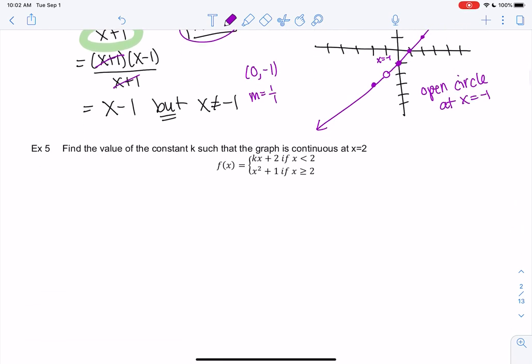Let's try one more in this video and then we'll take a break. Now we want to force this new function to be continuous at x equals 2, which is where the piecewise changes. So we have kx plus 2 when x is less than 2, and we have x squared plus 1 when x is greater than or equal to 2.